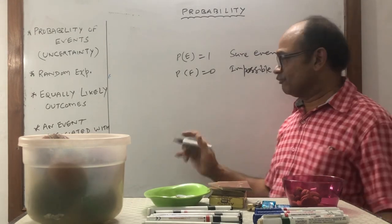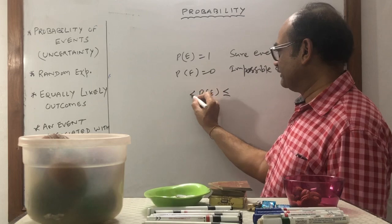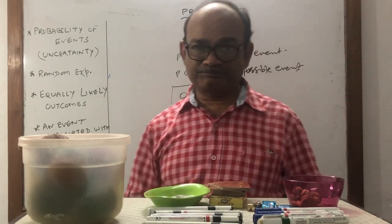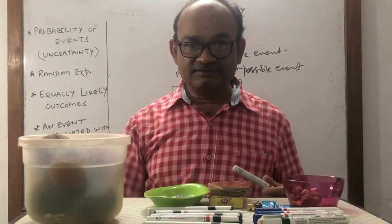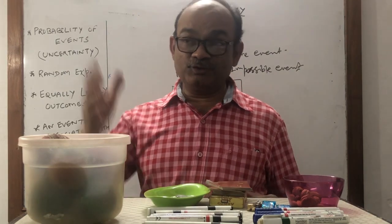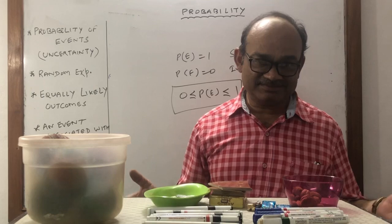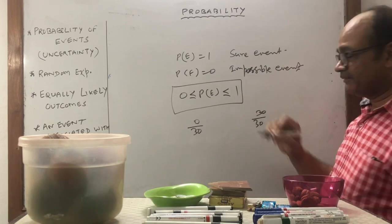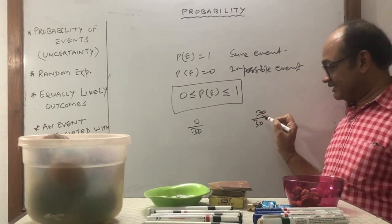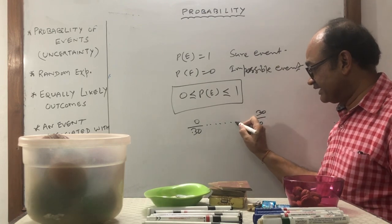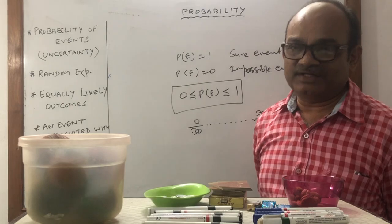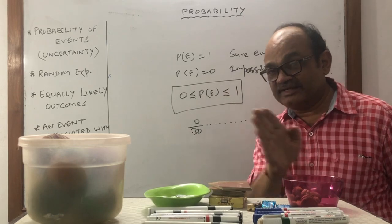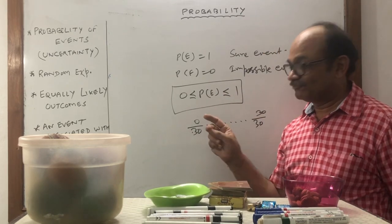Probability always lies between 0 and 1 — this is the most important point. If your answer comes as 3.2, that is not possible. Just like you cannot get 12 marks out of 10 or 32 marks out of 30 — you can only get between 0 and the maximum. All students get marks inside the limit. So always check: if your probability answer is negative or greater than 1, go back and check your work.